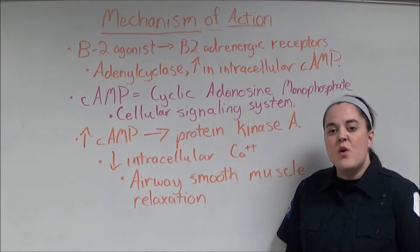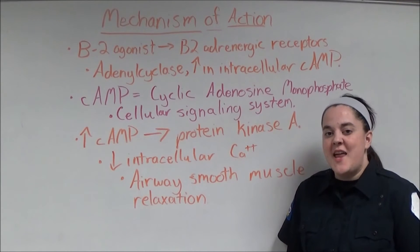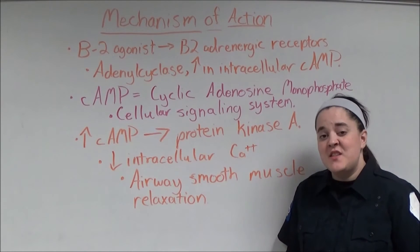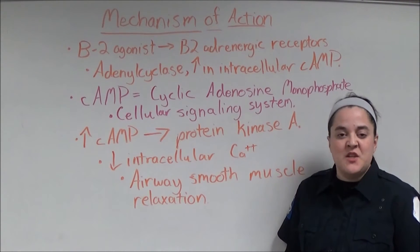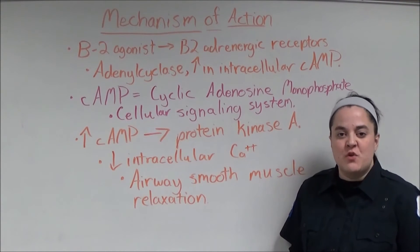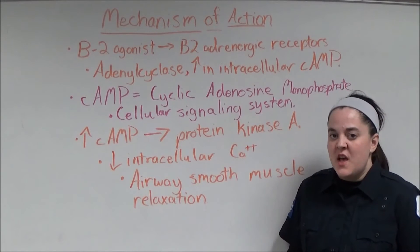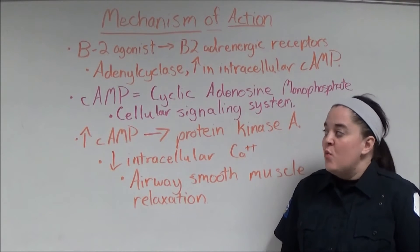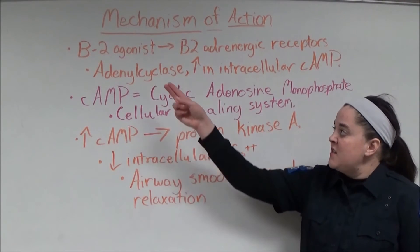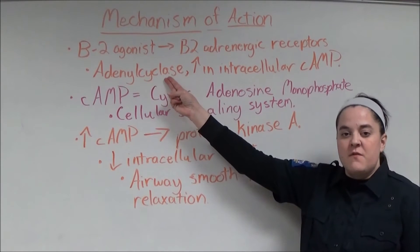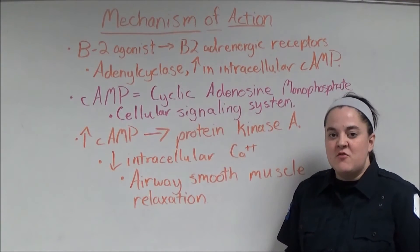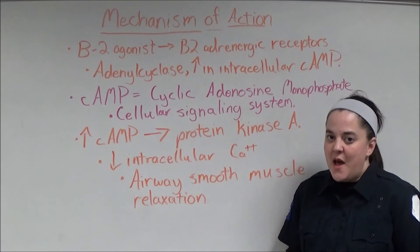According to the website pdr.net, when albuterol is inhaled, the beta-2 agonist activates the beta-2 adrenergic receptors on smooth muscle in the airway, which leads to the activation of the hormone adenyl cyclase and an increase in intracellular cAMP.